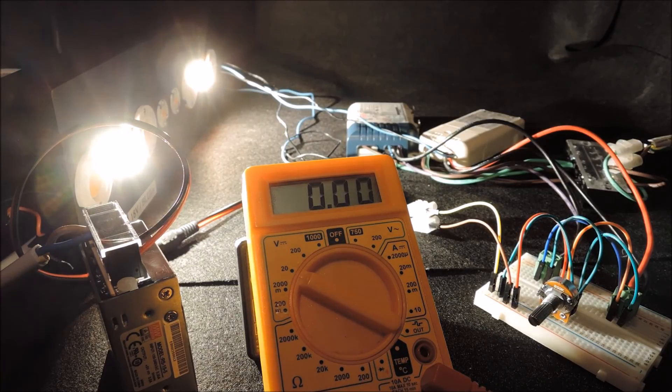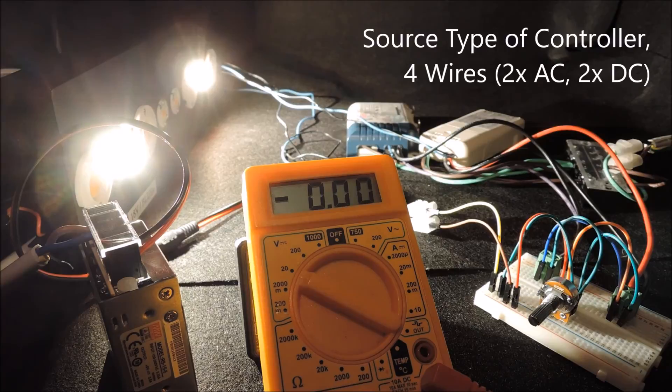A source type of device, however, would have an independent source of current. Thus, this type of controller usually has four wires attached, two for the input control and two for its own AC power.